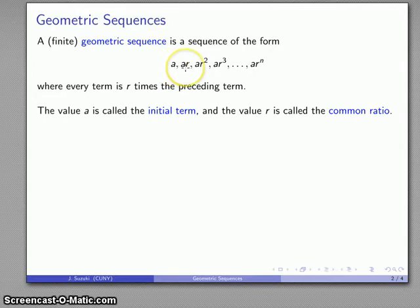So a times r gives you ar, ar times r gives you ar squared, ar squared times r gives you ar cubed and so on all the way up to this last term. And this value r, where we're multiplying the preceding term to get the next term, is called the common ratio of the geometric sequence.